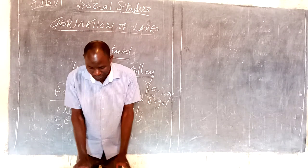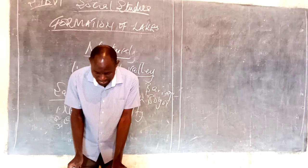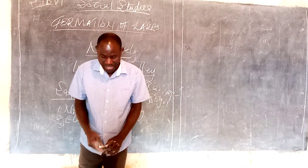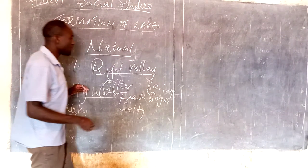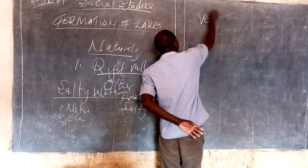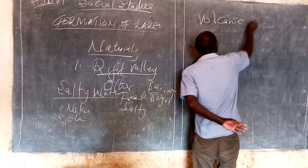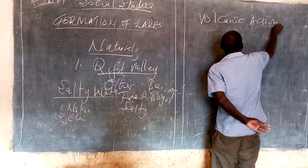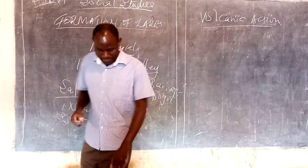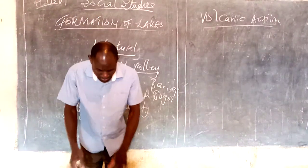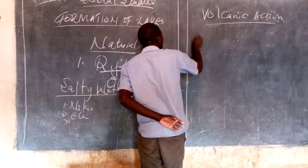Now, another formation of lakes we are going to study are lakes formed by volcanic action. These are natural lakes formed through volcanic action. These are grouped into two types.